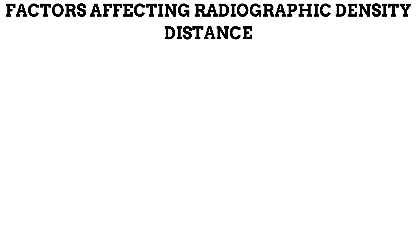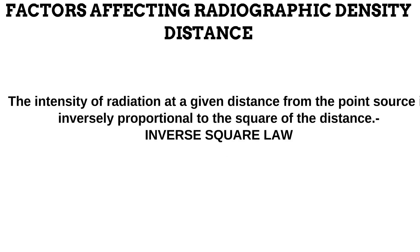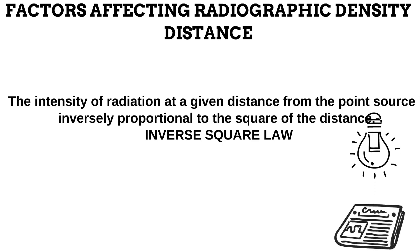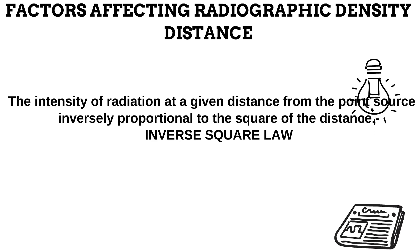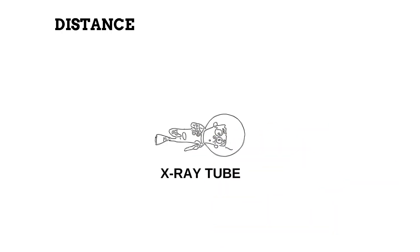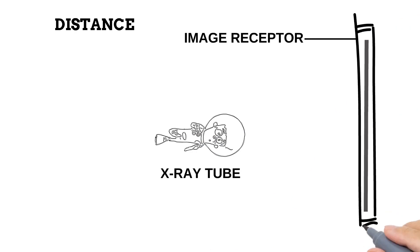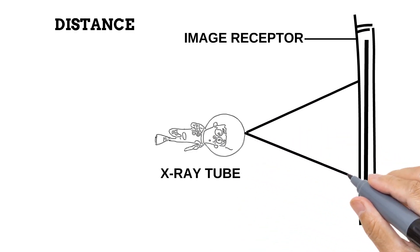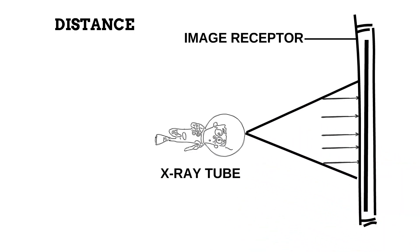The first influencing factor we'll look at is distance. As the source of radiation is moved farther away from the image receptor, less intensity of photons make it to the image receptor. Let us illustrate: imagine this is the X-ray tube and this is the image receptor. The beam of photons produced by the X-ray tube is divergent. With the tube at a short distance from the image receptor, the X-ray photons within the beam are close to each other, and having multiple photons concentrated on one area produces a great density on that area.